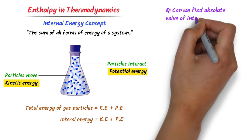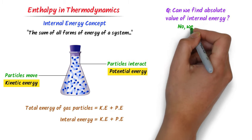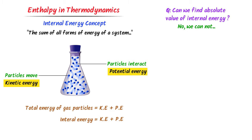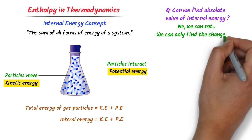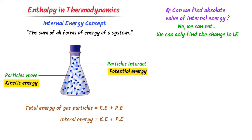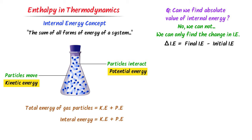Can we find the absolute value of internal energy? The answer is no. We cannot find the absolute value of internal energy. Rather, we can only find the change in internal energy — that is, the final value of internal energy minus the initial value of internal energy.